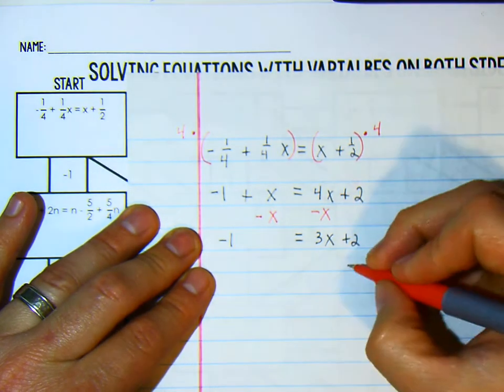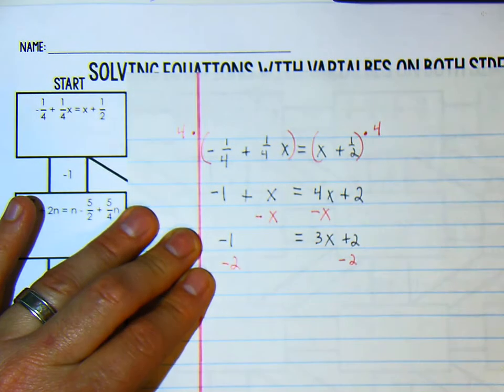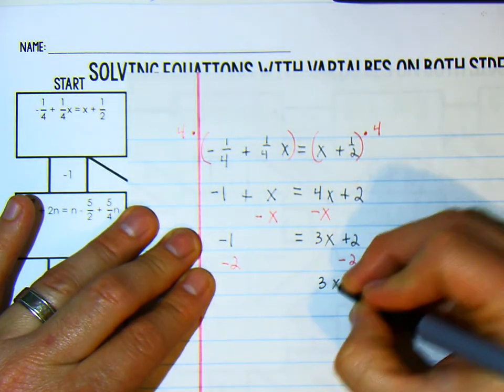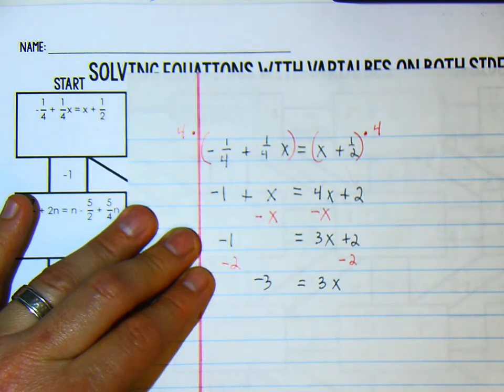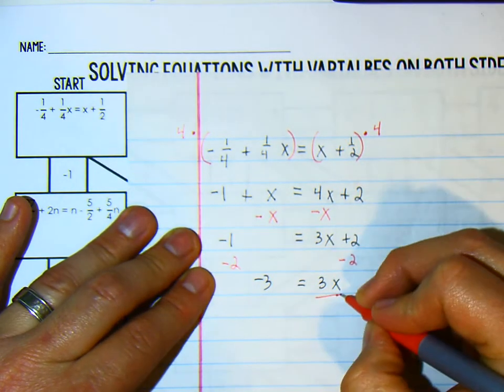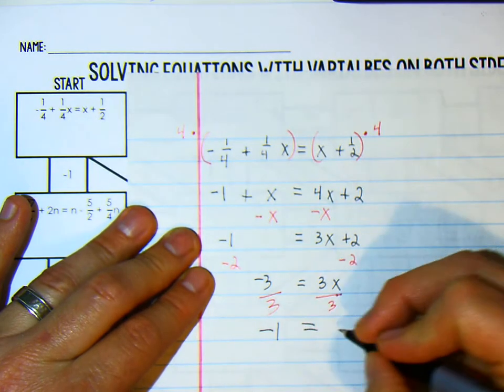Now we are going to minus 2 on both sides to isolate, to get that x alone. So we are going to minus 2 on both sides and we get 3x is equal to negative 3. Now x is almost alone, so we are going to divide by 3 on both sides and we get negative 1 is equal to x.